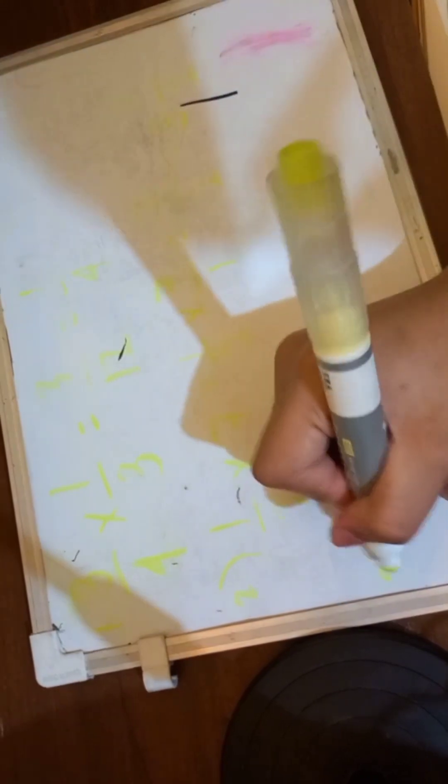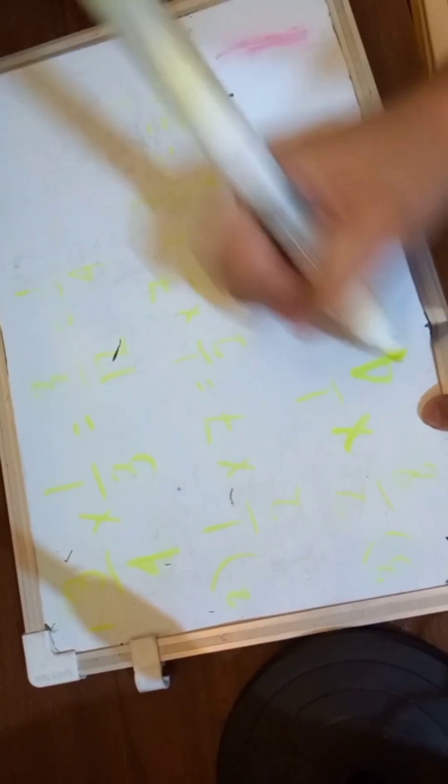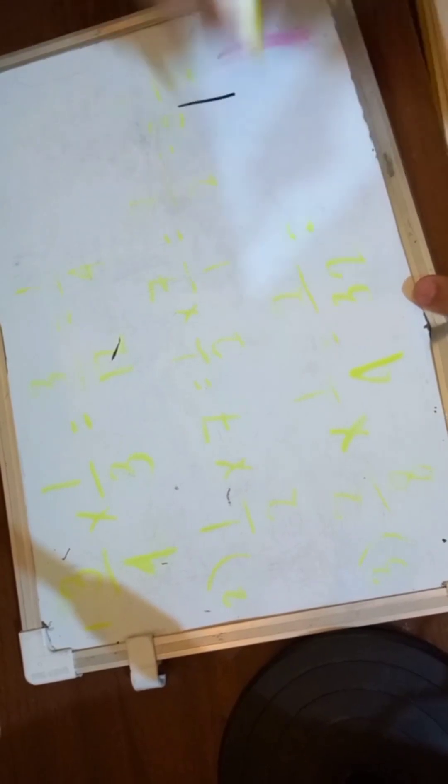The 3rd example is 2 over 8 times 1 fourth. 2 times 1 is 2, and 8 times 4 is 32. When you simplify it, it's going to be 1 over 16. Easy as that.